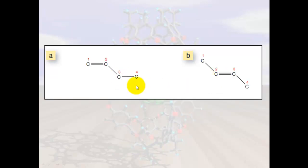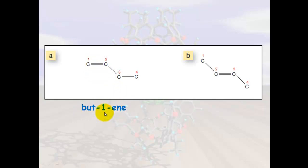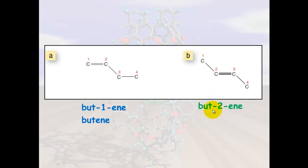Here are two examples of alkenes. This one has four carbons; the double bond is on position one, so it becomes but-1-ene, or just butene since the one doesn't need to be stated. This one always uses the lowest number carbon, so it's but-2-ene, or two-butene if you prefer to put the position number in front.